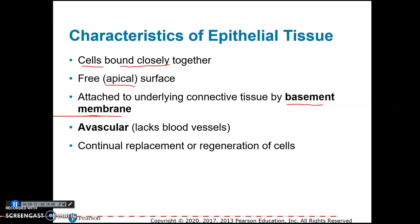Epithelial tissue lacks blood vessels, so we say it's avascular. Epithelial tissue is also able to replace or regenerate cells — it contains stem cells that continue to divide and replace cells that are old and have been lost.